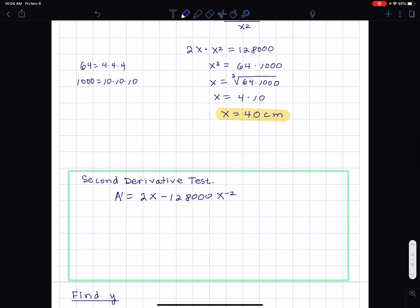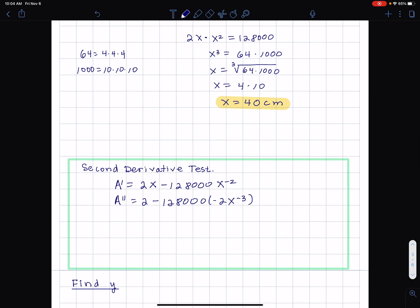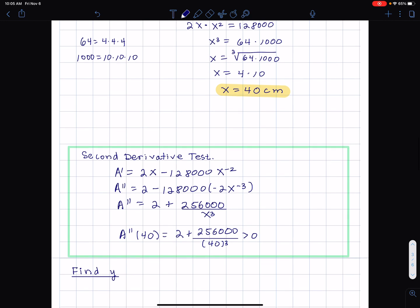So I copied down what A prime is. One of the reasons I'm doing this is because it's easy. So if it were really difficult, I'd probably come up with some excuse for not doing it. The derivative of 2x is 2. The derivative of x to minus 2 is negative 2x to minus 3. So A double prime is 2, and negative times negative makes positive, 128 times 2 is 256,000 over x cubed.